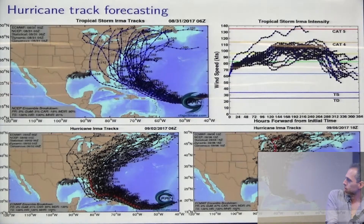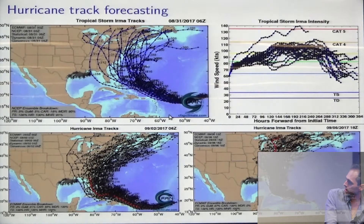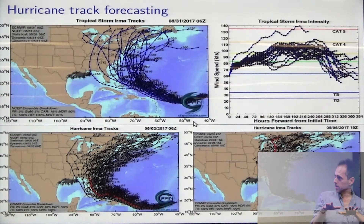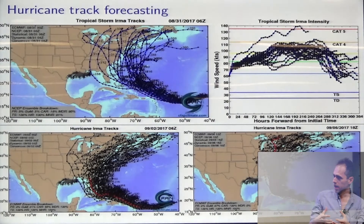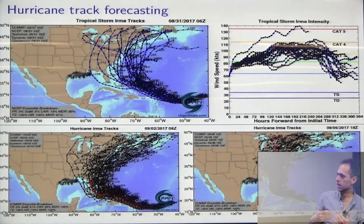This is the Hurricane Irma track on August 31st. A few days later they updated this — the weather forecast discarded the hurricane simulations that did not look like what the hurricane was actually doing, and generated new ones that looked more like it and projected those further. So you get a better idea of what to expect, but it's still not perfect. Most of these projected hurricanes were going to the east and avoiding Florida, but a few were going to the west — and as you know, that's actually what ended up happening.